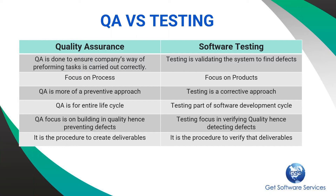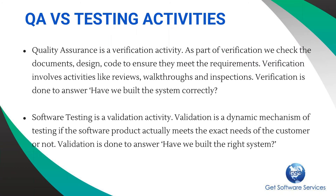The main difference between quality assurance and software testing is that quality assurance is an ongoing activity which mainly focuses on the process. If the process is right, the end product will also be of better quality. Software testing finds defects in the software system, which can be corrected before the customer or end user finds them. That is the difference between quality assurance and testing.